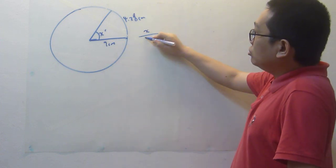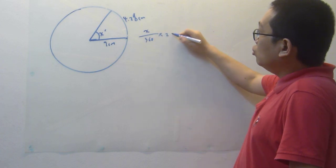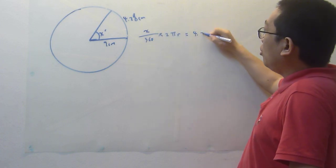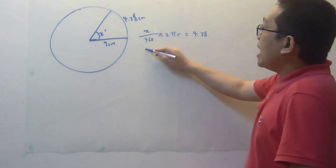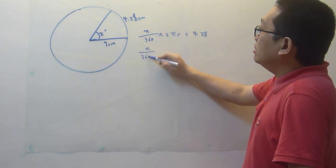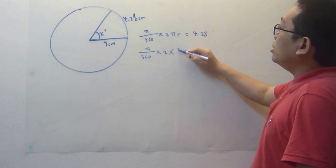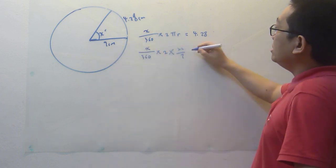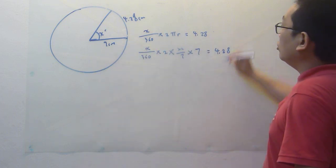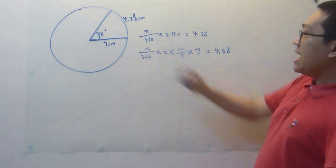So x divided by 360 times 2πr equals 4.28. So x is the one that I have to find. π is 22 over 7, and radius is 7, for me to get 4.28. So how do I find x?